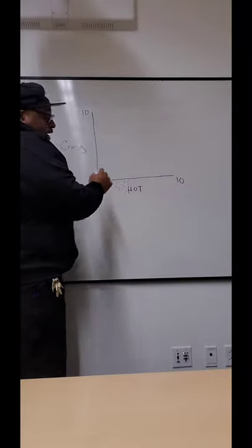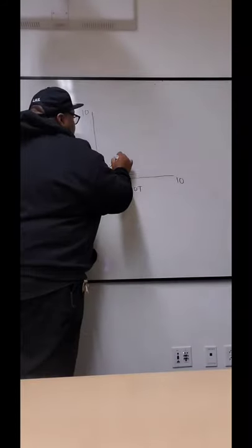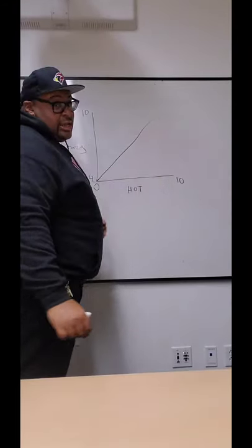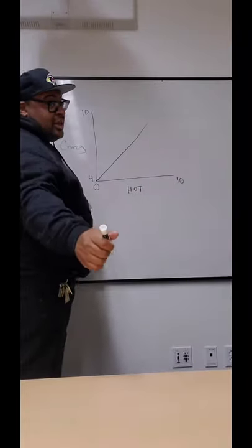Now, to separate our hot, crazy axis, we'll go right down the middle. This line that we just created, this is called our crazy line. We do not cross the crazy line, and I'm going to get to that in a moment.